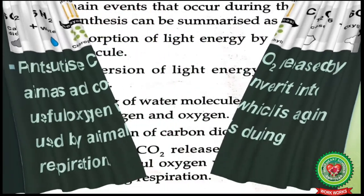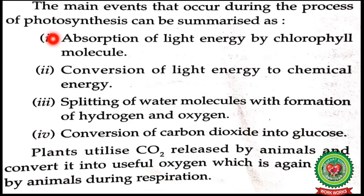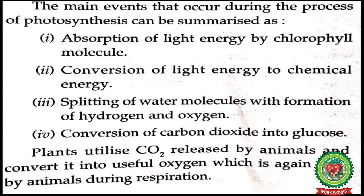Look at page number 46. The main events that occur during photosynthesis can be summarized as: first, absorption of light energy by chlorophyll molecules; second, conversion of light energy to chemical energy and splitting of water molecules with formation of hydrogen ions and oxygen; third, conversion of carbon dioxide into glucose.